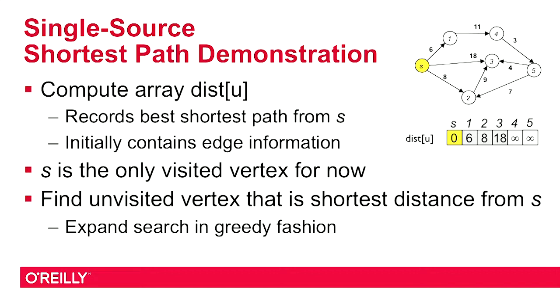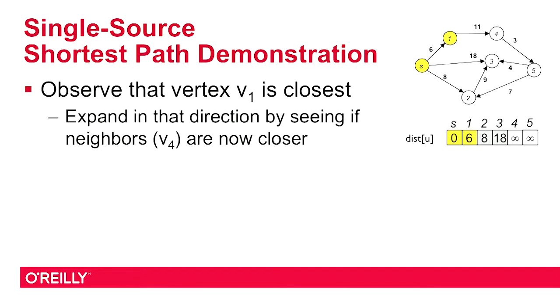Let's demonstrate how this works with this one small graph, and afterwards I can take you to the code. We'll start with this initial setup. My question is: how do I find the vertex that is the shortest distance away from S? I'm just going to look at 6, 8, and 18 — so 6 is the one that's shortest. I'm going to expand in that direction, capturing the fact that I've visited this vertex. I'm concerned about continually expanding my search into the other vertices I have not yet visited. Now that I know 6 was the closest, I expand in that direction and do a check: are there any other vertices that are now closer because I've made this leap to this vertex?